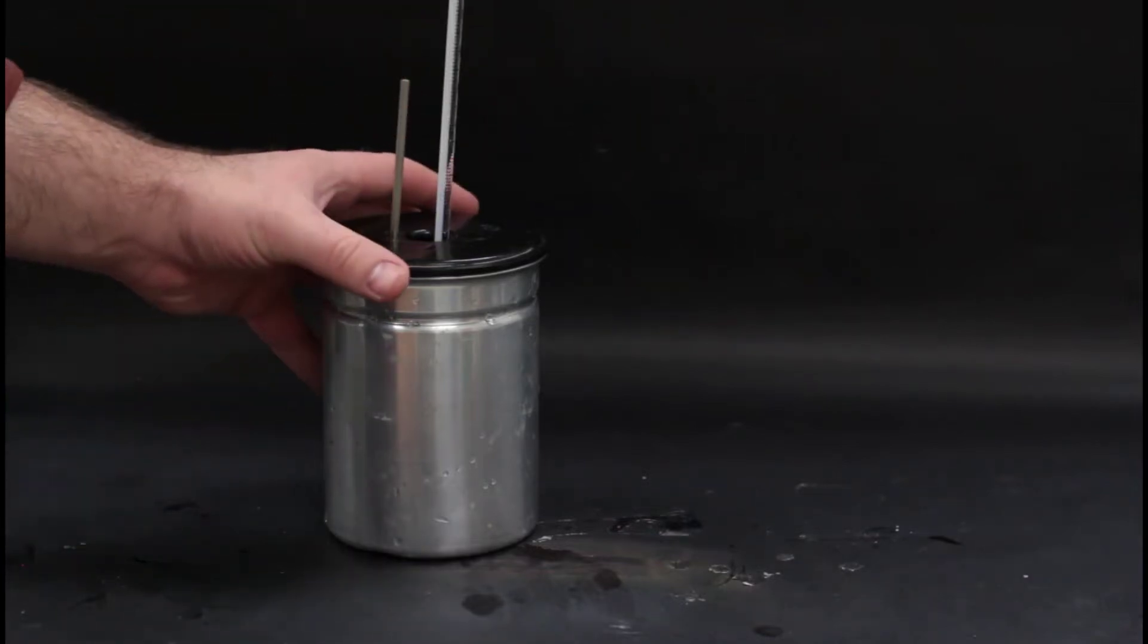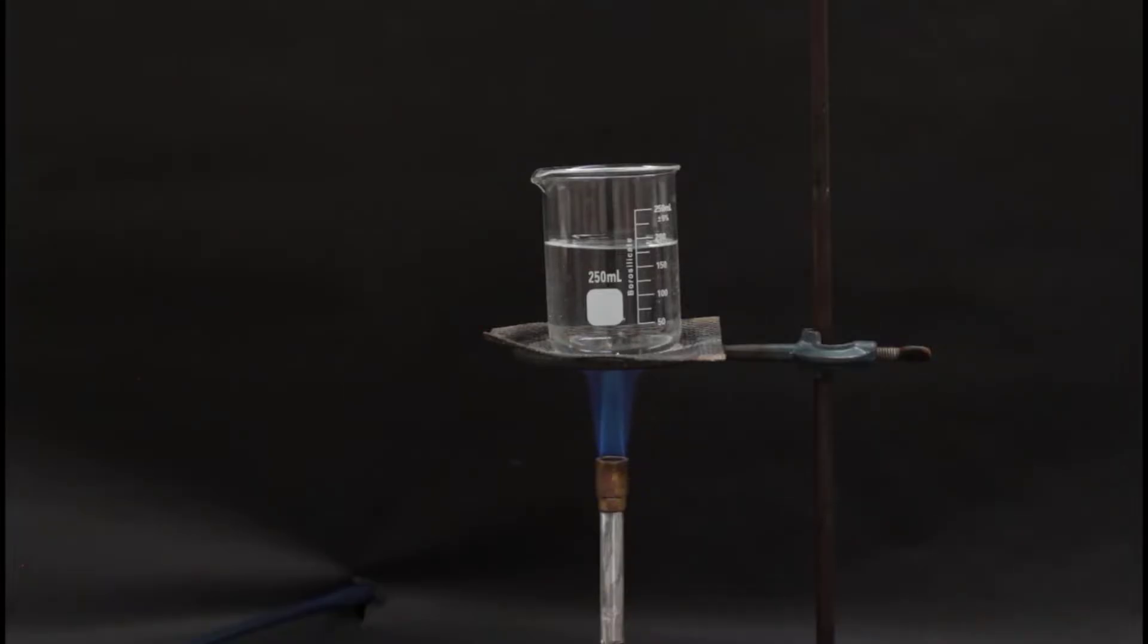It'll probably be the same as it was before, but you'll set up your ring stand and Bunsen burner. Fill the 250 milliliter beaker with enough tap water to cover your piece of metal and set it on the ring stand to boil.